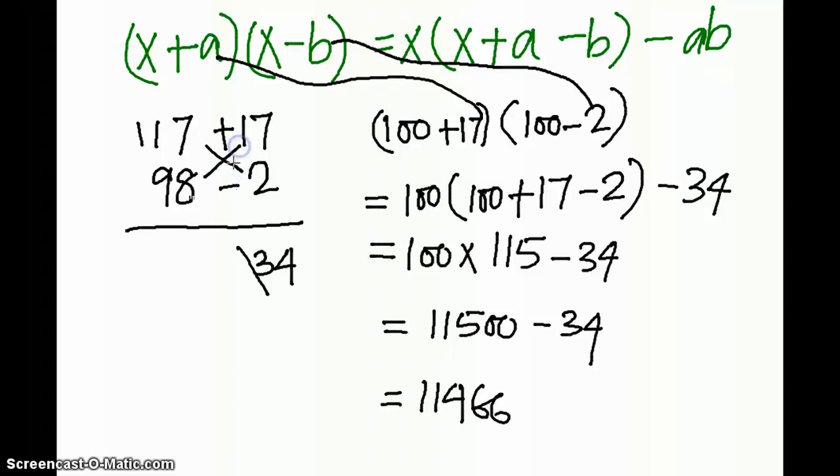Whatever we do, the answer is 115. I'll demonstrate again: either 100 plus 17, which becomes 117 minus 2, so it becomes 115. Or we can do 100 minus 2, which is 98, plus 17.